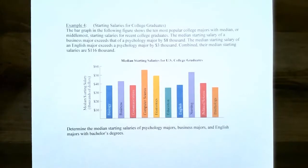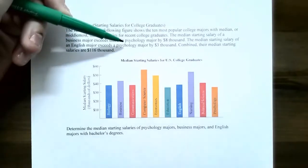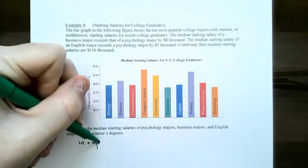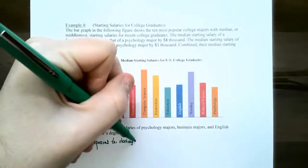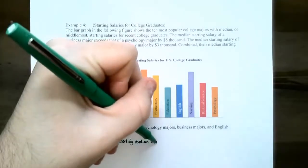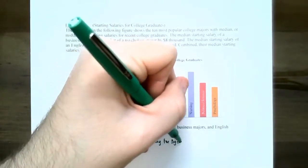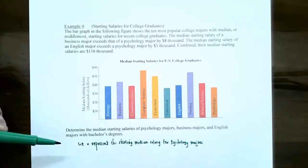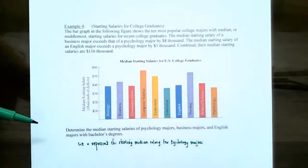After reading the problem carefully, you'll notice that there are three different things we're being asked to find. That does not mean we need three variables. Notice that both English and business majors are being compared to the psychology graduate's salary, so we don't need three variables — we just need one. We're going to let X represent the starting median salary for psychology graduates.